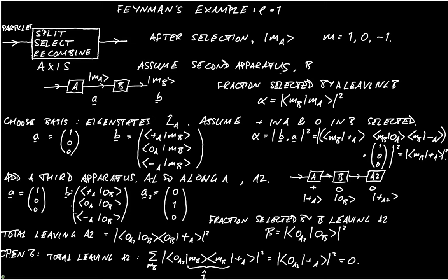So by opening that central selection apparatus, we remove the effect of that central apparatus. So when the particles leave A, they're in the state plus A, they pass through B and because we are not interacting with the particles, they will remain in the state plus A. So when they then hit the final selection apparatus, A2, which is in state zero, that's orthogonal to the first selection apparatus, and so we get no particles at all. It's a slightly counterintuitive effect.